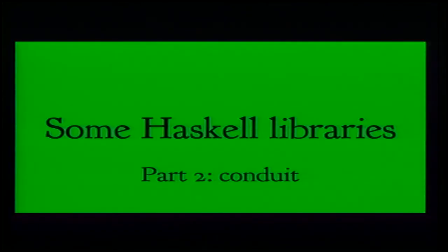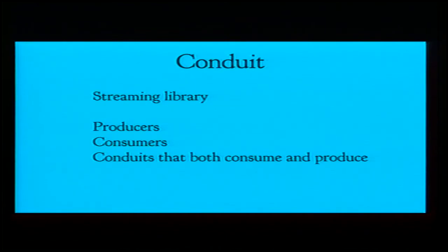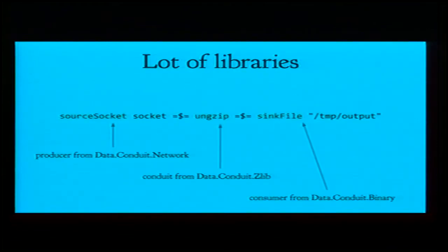The second library in our exploration is conduit — a streaming library. We have a long stream, a sequence of objects, and we want to handle them without loading them all into memory. There are three concepts in conduit: producers, which just produce a stream of values; consumers, which just consume a stream of values and do something with it; and conduits, which both consume on one side and produce something else on the other side.